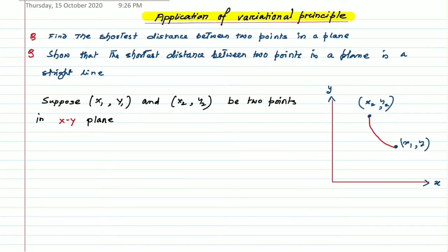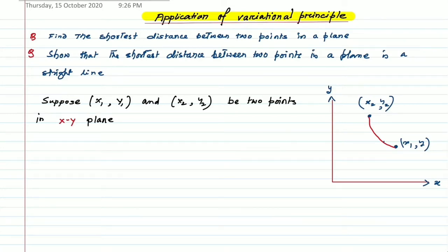We can have an infinite number of paths between these two points (x1, y1) and (x2, y2). We need to find the shortest path, or we need to show that the shortest path is the straight line. In the red color, this is the required path — let us assume that — and we need to show that it must be a straight line. Let us consider a very small element ds of this path.